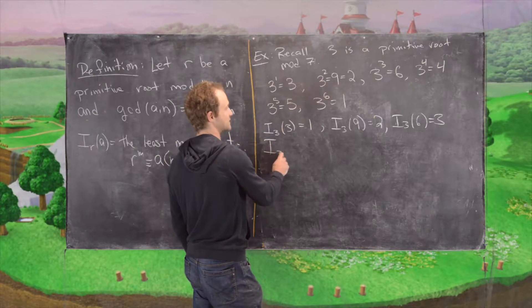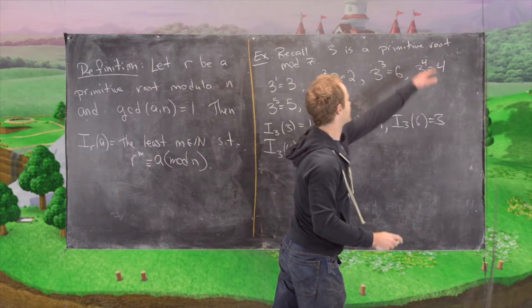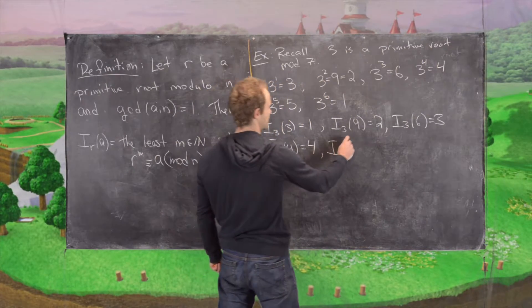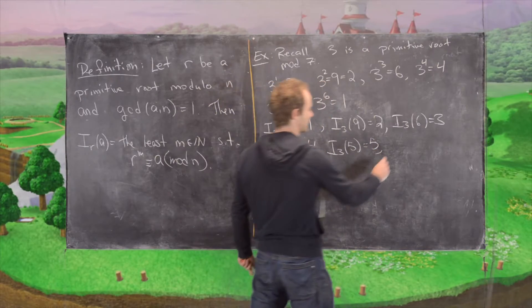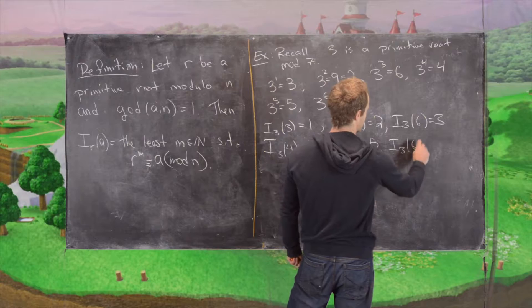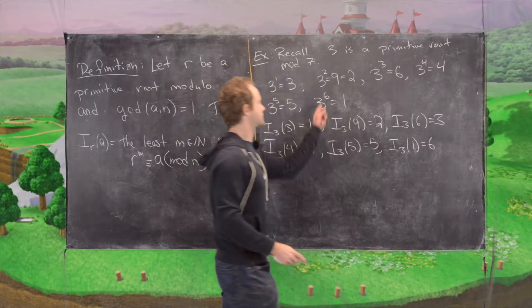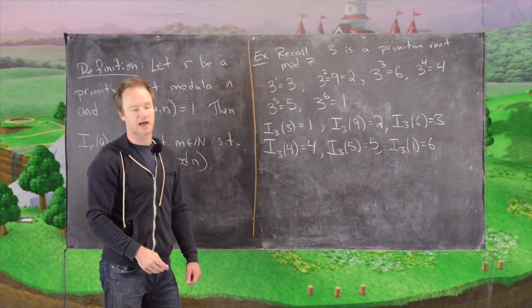The index with respect to 3 of 4 is 4 because 3 to the 4 is 4. The index with respect to 3 of 5 is 5. And then finally the index with respect to 3 of 1 is 6 because 3 to the 6 is 1 and that's the least positive number that makes that happen.